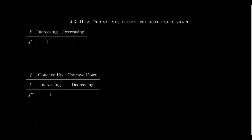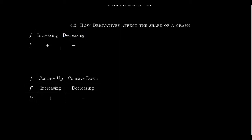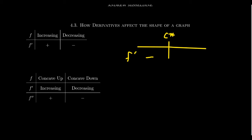The main idea behind the first derivative test is that whenever the first derivative is positive, that implies the original function is increasing. And likewise, when the first derivative is negative, that implies the original function is decreasing. So the first derivative determines the monotonicity of the function. If you have a critical number and the derivative goes from positive to negative, that forms a local maximum. Or if the derivative switches from negative to positive, that indicates a local minimum value.